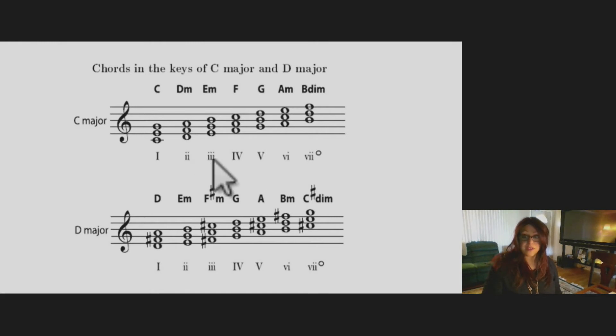Now you look at the third scale degree, E, G natural, and B natural. Do, mi, sol, mi, do. Great.